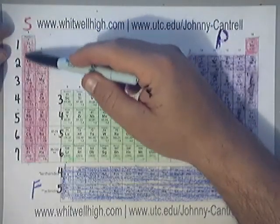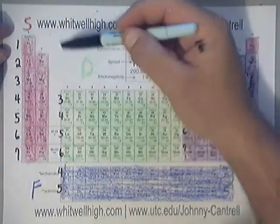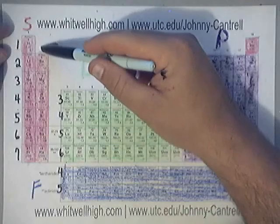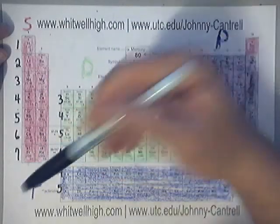Anything in column number one has one valence electron. Anything in column number two has two valence electrons.